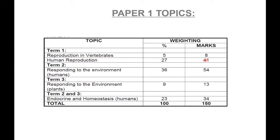Reproduction in invertebrates will be 8 marks. Human reproduction 41 marks. Responding to the environment will be 54 marks. That includes the nervous system, the eye and the ear. Responding to the environment by plants will be 13 marks and then finally endocrine and homeostasis will be 34 marks. So that will be your breakdown of your paper. You will have this paper, Paper 1, which will be 2 and a half hours long.